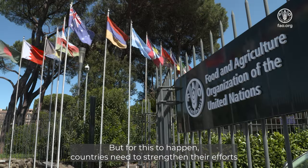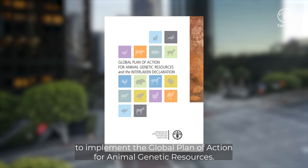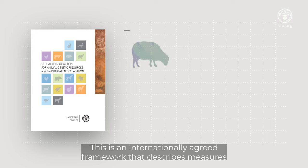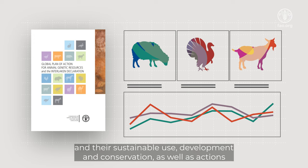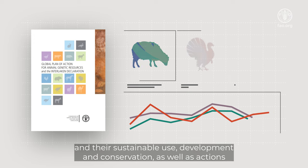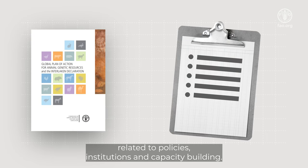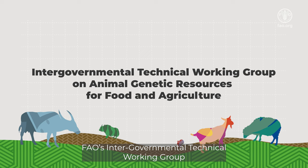For this to happen, countries need to strengthen their efforts to implement the Global Plan of Action for Animal Genetic Resources. This is an internationally agreed framework that describes measures related to breed characterization and monitoring, and their sustainable use, development and conservation, as well as actions related to policies, institutions, and capacity building.